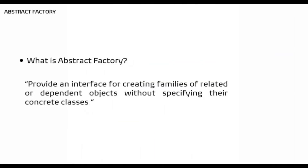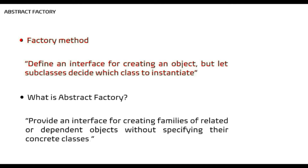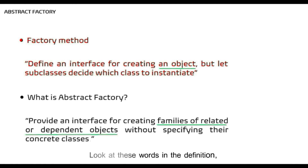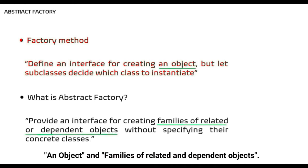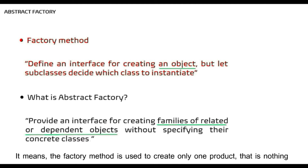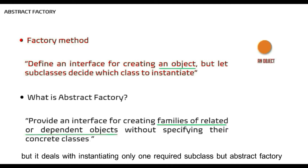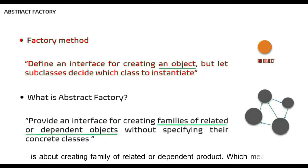What is Abstract Factory? Gang of Four defines it as: 'Provides an interface for creating families of related or dependent objects without specifying their concrete classes.' Now let's bring in the Factory Method definition: 'Define an interface for creating an object, but let subclasses decide which class to instantiate.' Notice the key words: 'an object' versus 'family of related and dependent objects.' Factory Method creates only one product — it deals with instantiating only one required subclass — but Abstract Factory is about creating families of related or dependent products.